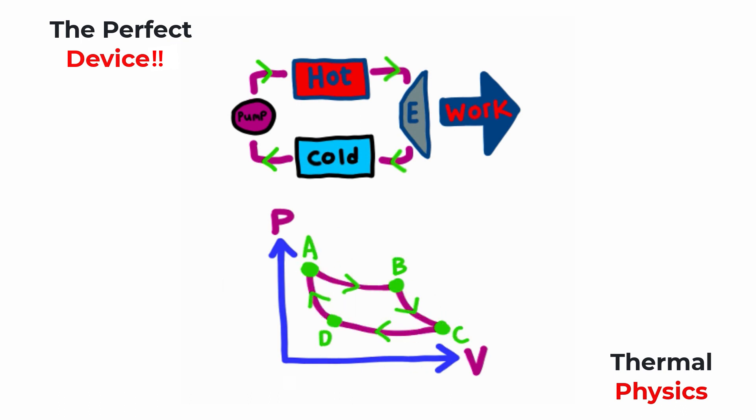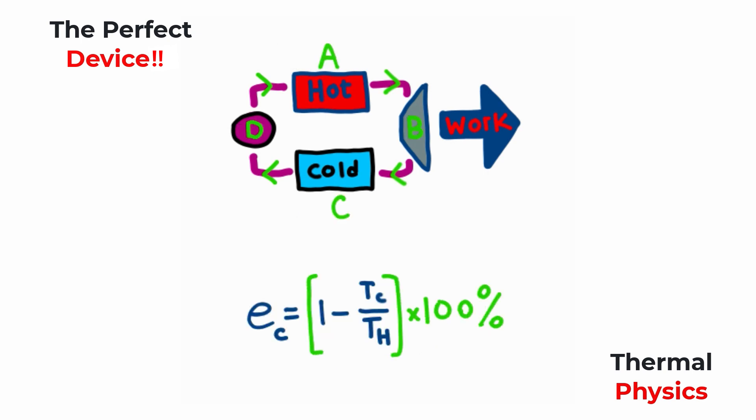Now, this might seem kind of abstract just by looking at this. So what I'm also going to do is give you an equation. The equation that you see below the screen here is the equation for the efficiency of a Carnot engine. This is basically the ideal theoretical efficiency that you will see, where you take the ratio of the temperature is cold over hot reservoir. You subtract that from one, and then you multiply it by 100% to get the efficiency of the Carnot engine.